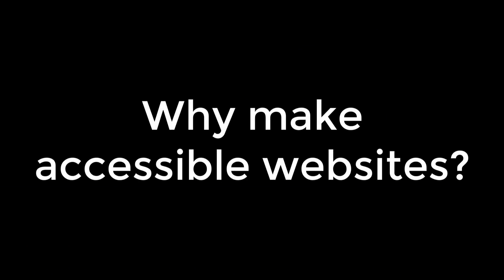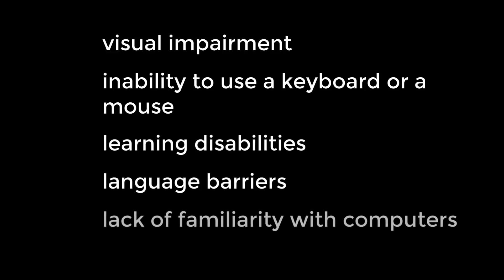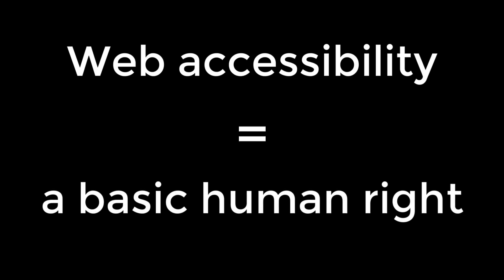Why make accessible websites? Website accessibility helps people with a range of needs access content on the web. There are a variety of reasons people rely on accessible websites. These include visual impairment, the inability to use a keyboard or a mouse, learning disabilities, English language barriers, and a lack of familiarity with computers. Remember that your website is probably the only way to gather the information that you're providing. The UN Convention on the Rights of Persons with Disabilities recognizes web accessibility as a basic human right.